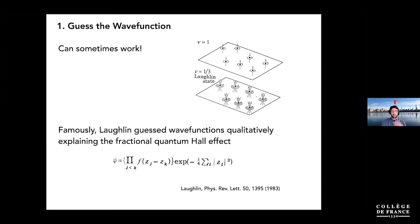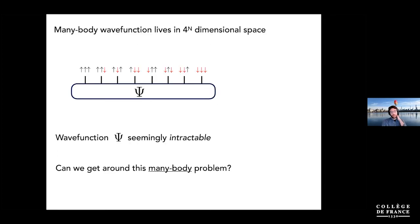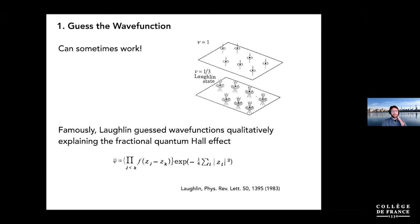People realized this long ago and said: wave functions are just a way of setting up the formalism, but we have to get around them somehow. We can't really work with quantum physics this way, at least not for large many-body problems. So what were some of the things people have done and continue to do to deal with this problem?